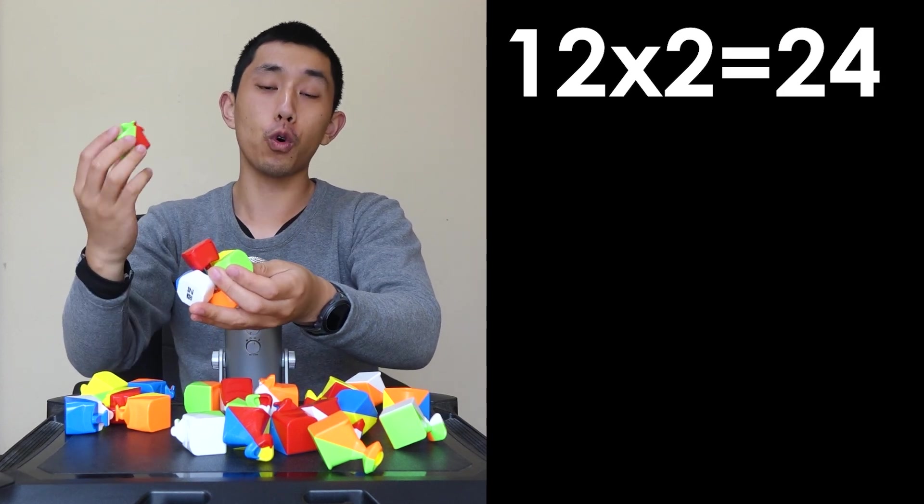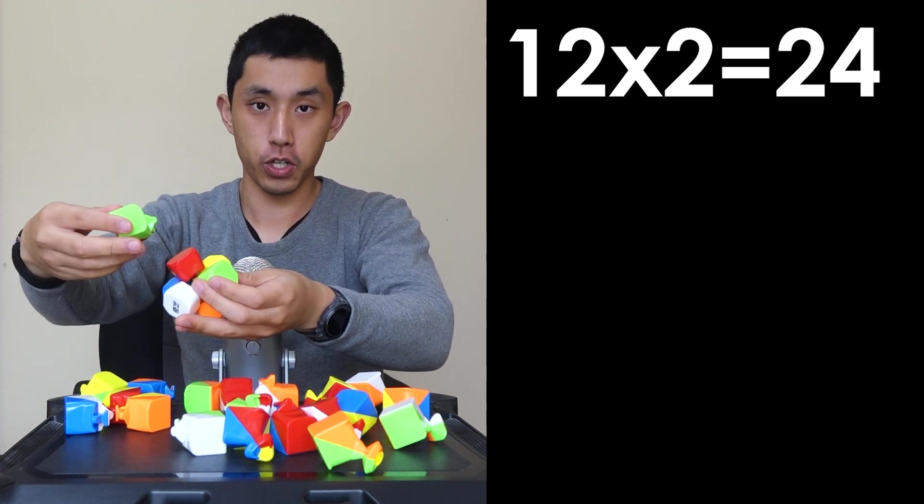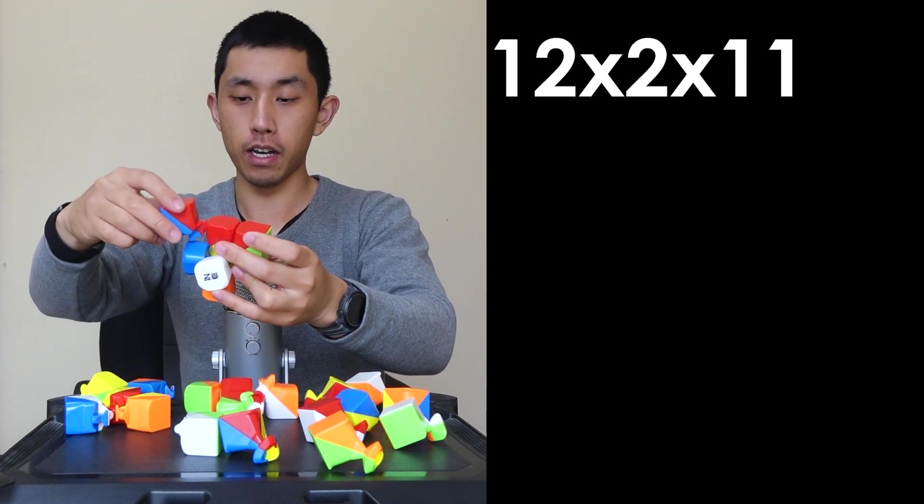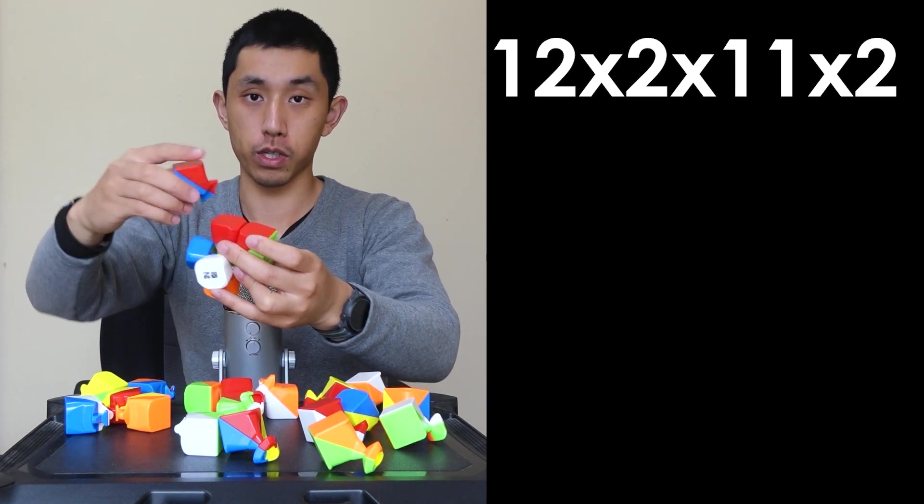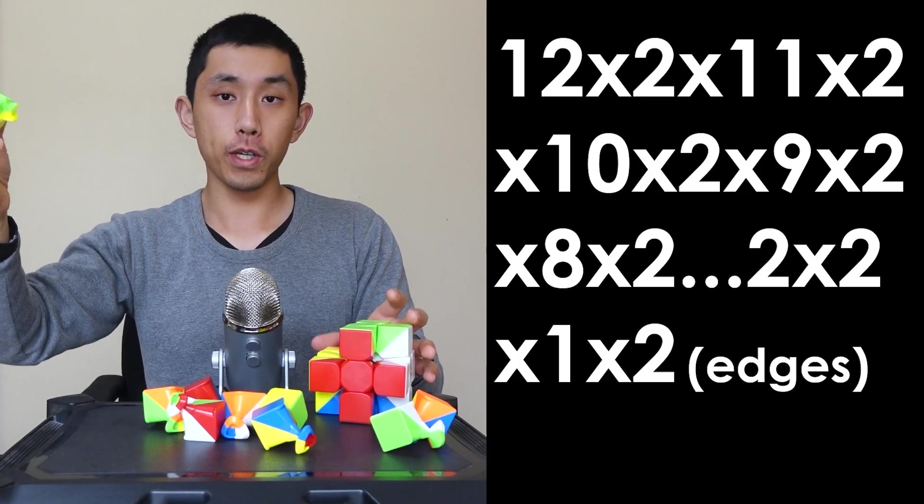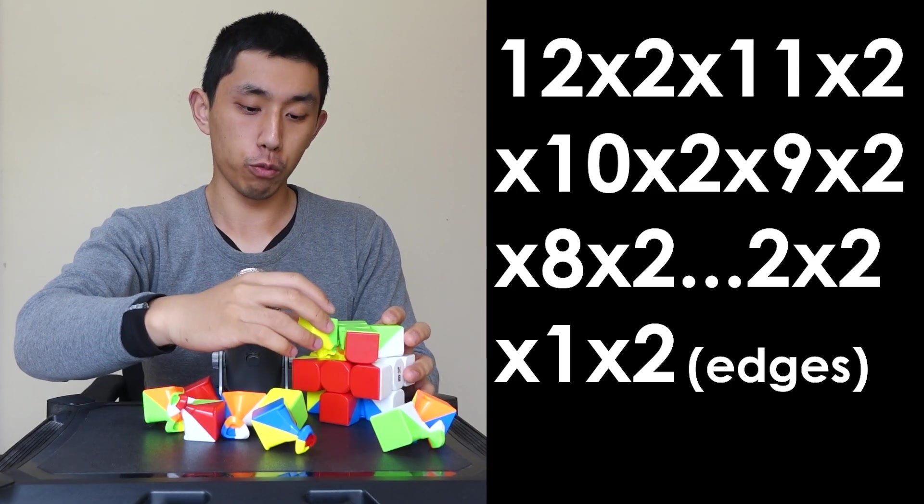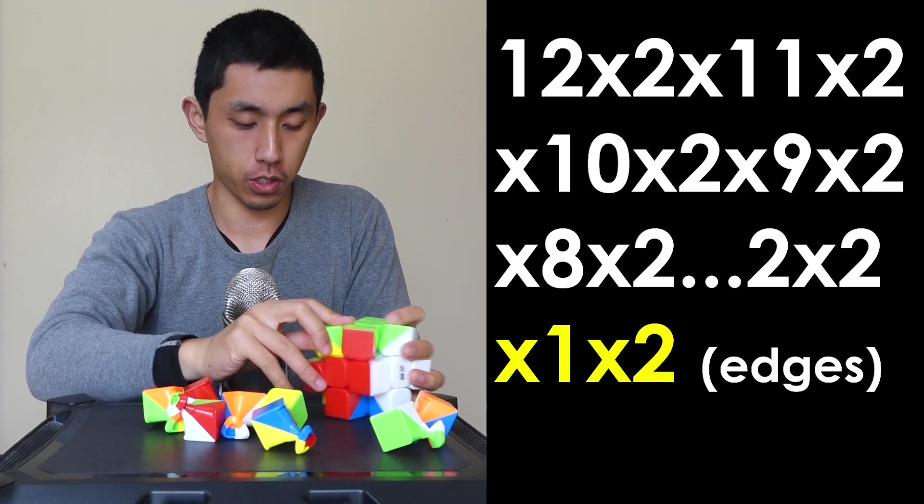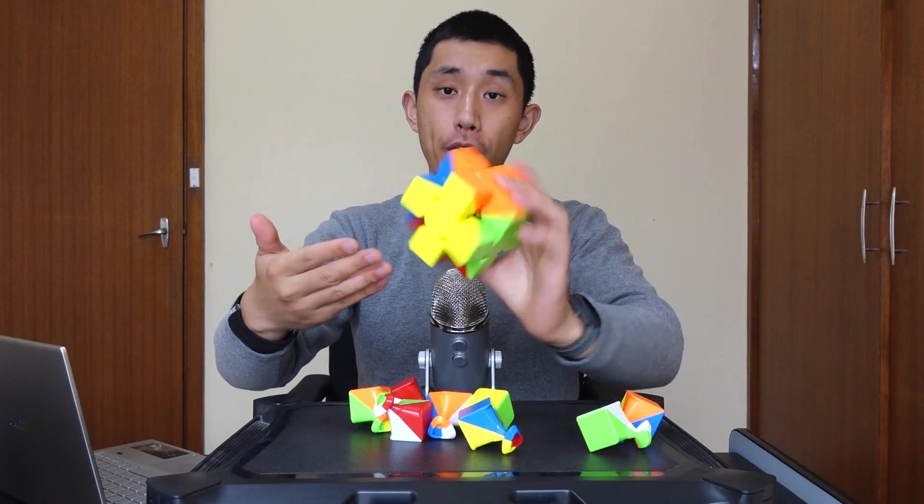This means there are 24 ways to place the first edge. For the next edge, there are only 11 possible locations, and we can orient it in one of two ways once again. This pattern continues, 10×2, 9×2, 8×2, all the way to the last one where there's only one location left and two possible orientations. Now that we've put all 12 edges in place,